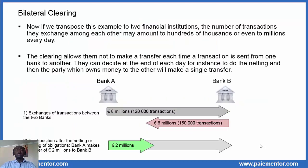Now, if we transpose this example to two financial institutions, the number of transactions they can exchange among each other may amount to hundreds of thousands or even millions every day. The clearing process allows them not to make a transfer each time a transaction is sent from one bank to another. They can decide at the end of the day, for instance, to do the netting or offsetting of obligations, and then the party which owes money to the other will make a single transfer.